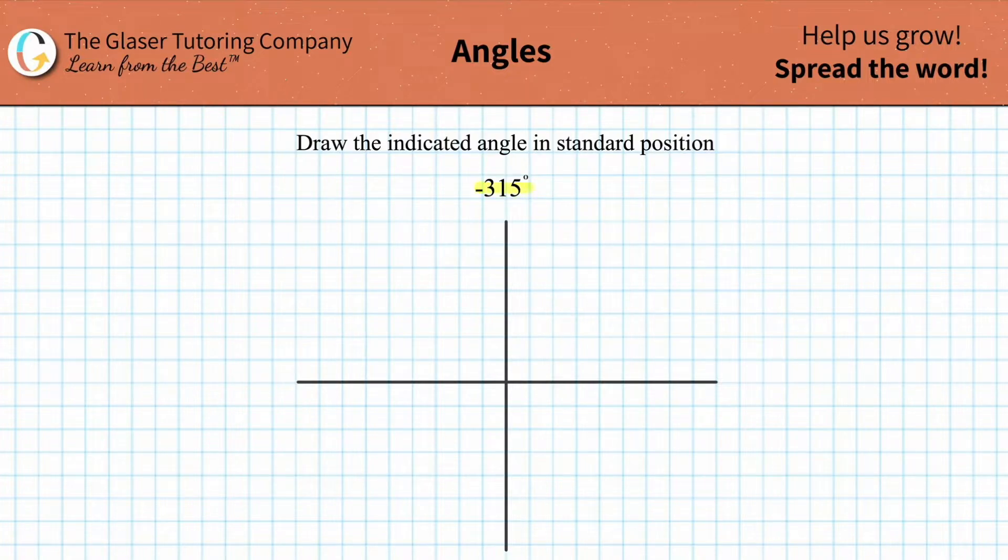How do we draw a negative 315 degree angle in standard position? We're going to start with our initial side on the positive x-axis.